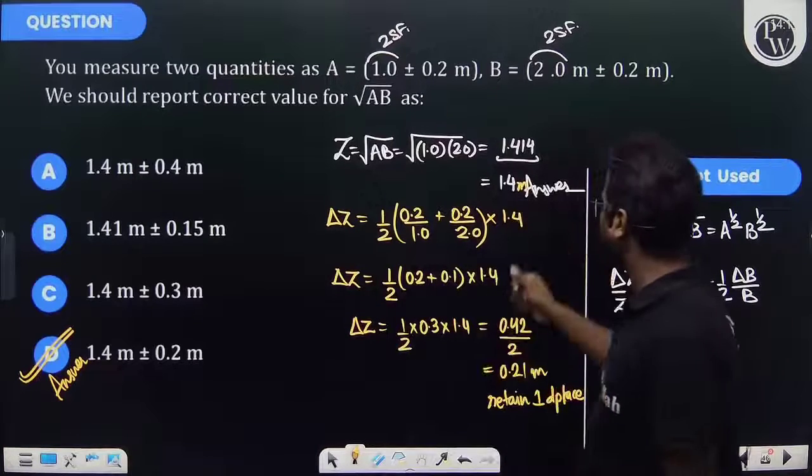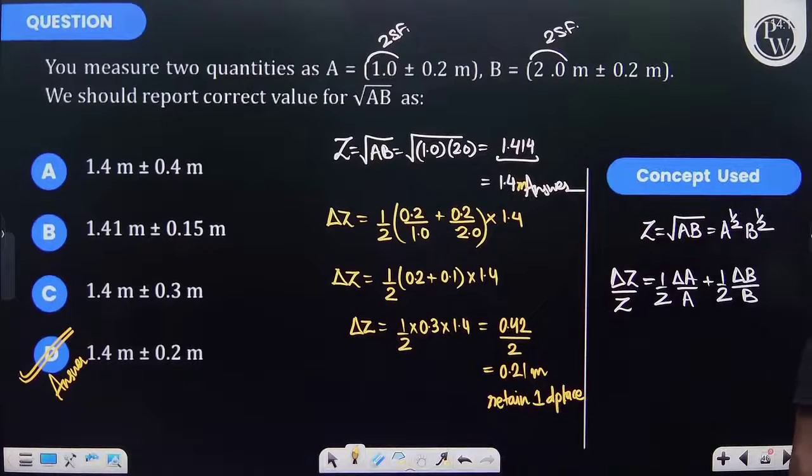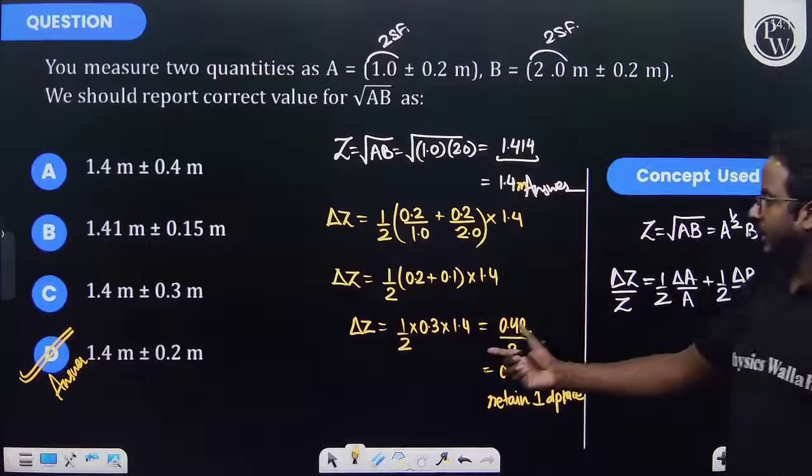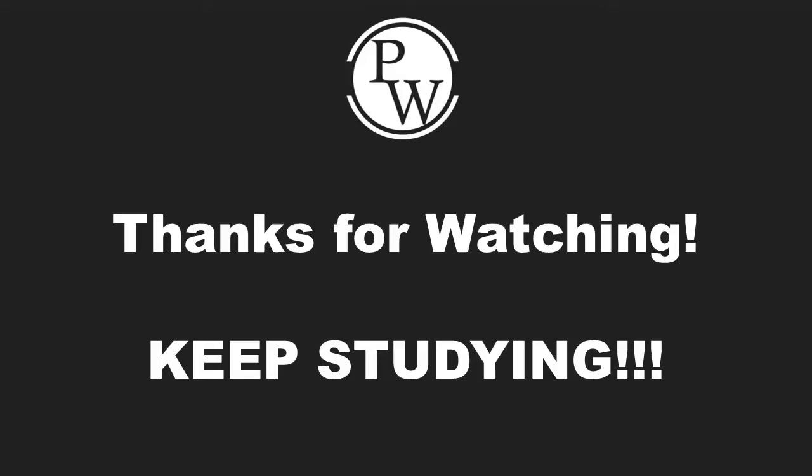Because the main value has one decimal place, the error should also retain one decimal place. That's why 1.4 ± 0.2 m is our correct answer. I hope this is very clear.